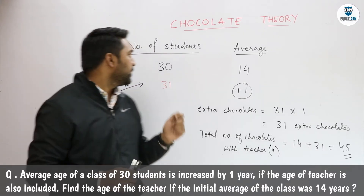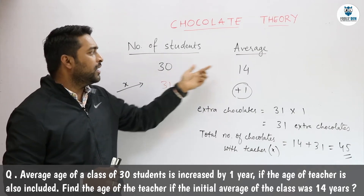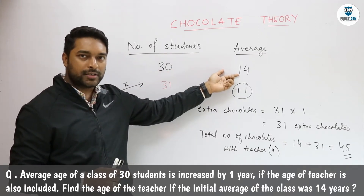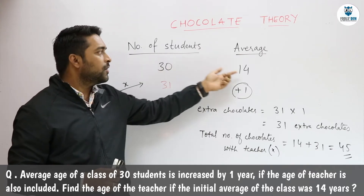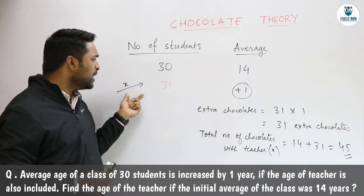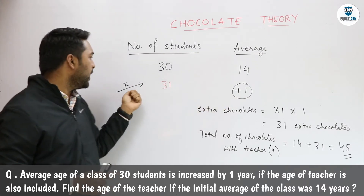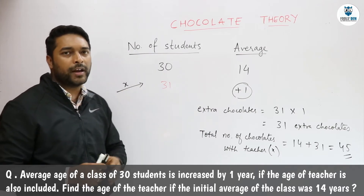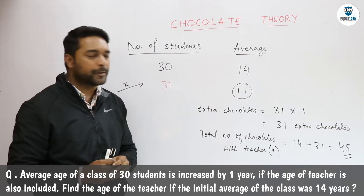There are 30 students in a class and their average age is 14 years, which means each of the 30 students has 14 chocolates with them. When the teacher comes, the average increases by 1 and we have to find the age of the teacher — that means we have to find how many chocolates the teacher brought.